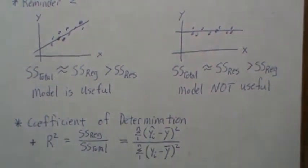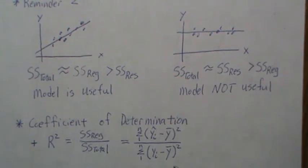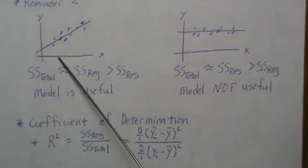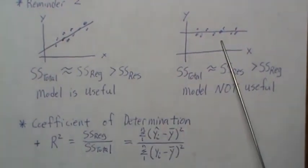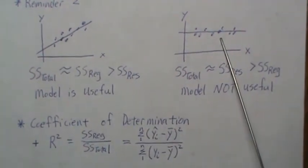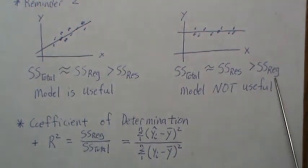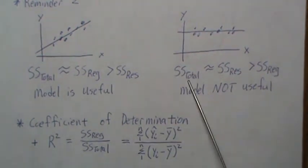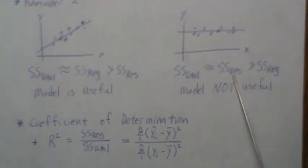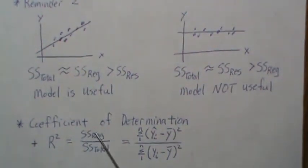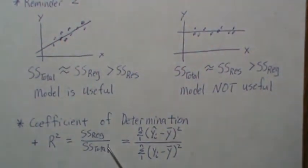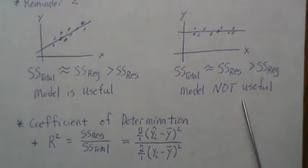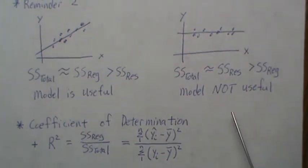When R² is close to one, the model is useful. When the regression sum of squares is significantly smaller than the total and the residual sum of squares dominates, R² approaches zero — and when R² is close to zero, the model is not useful.